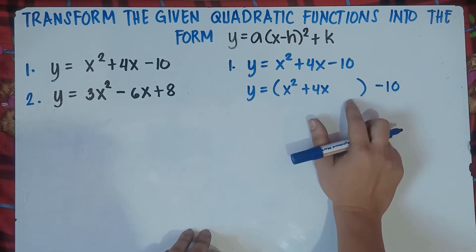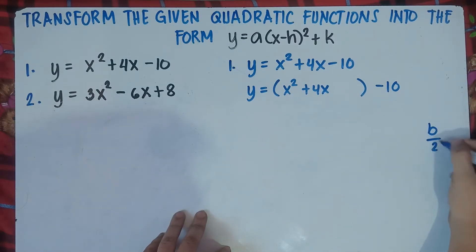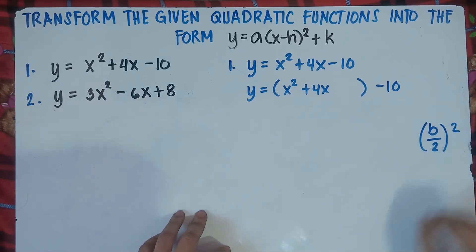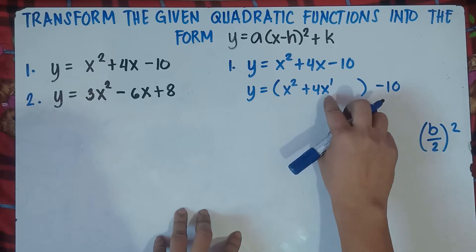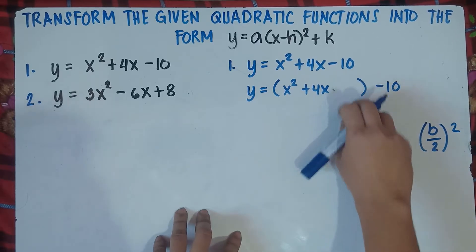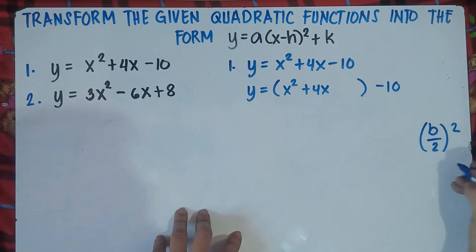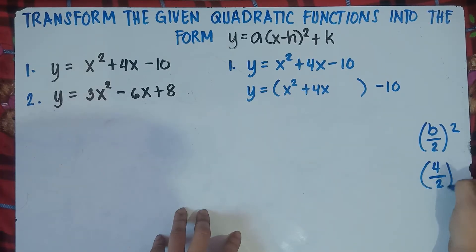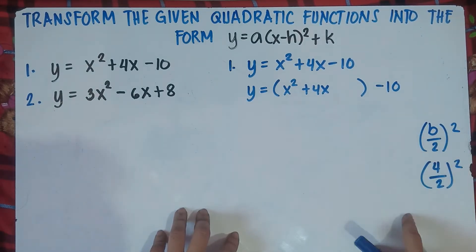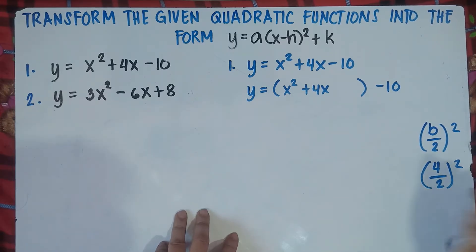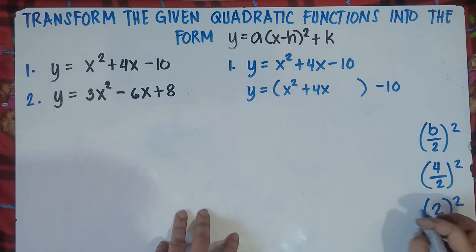Now we will be adding a new constant here. To get that number, we use the formula b over 2, quantity squared. Our b is the coefficient beside x with exponent of 1, so our b is 4. So 4 divided by 2, that is 2, then squared. 2 squared means 2 times 2, that is 4.